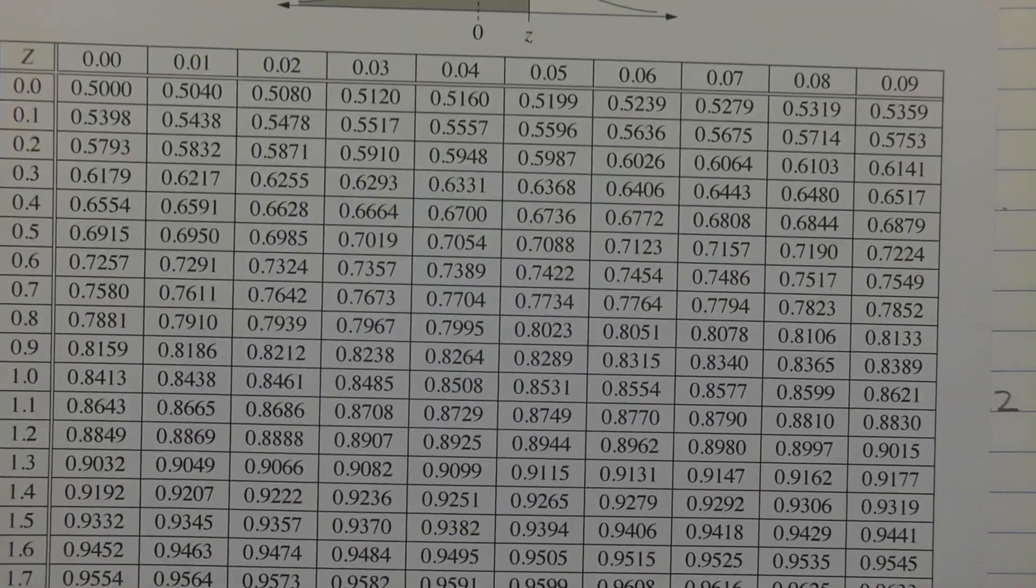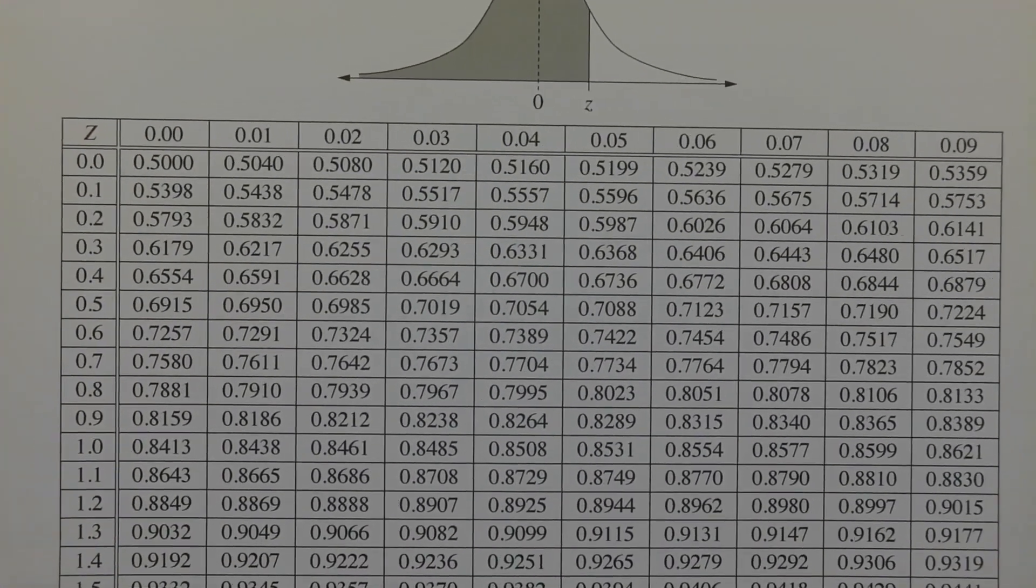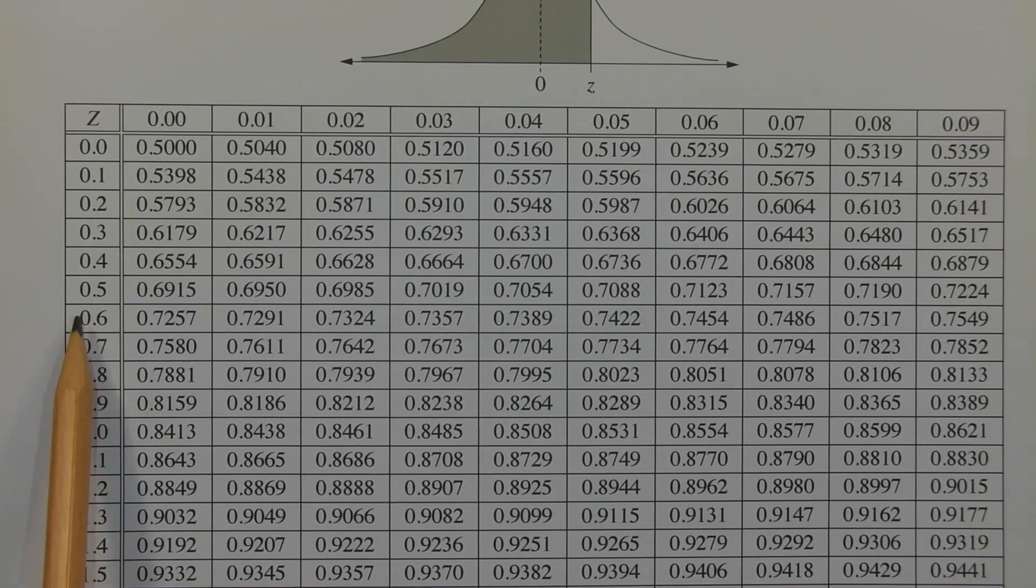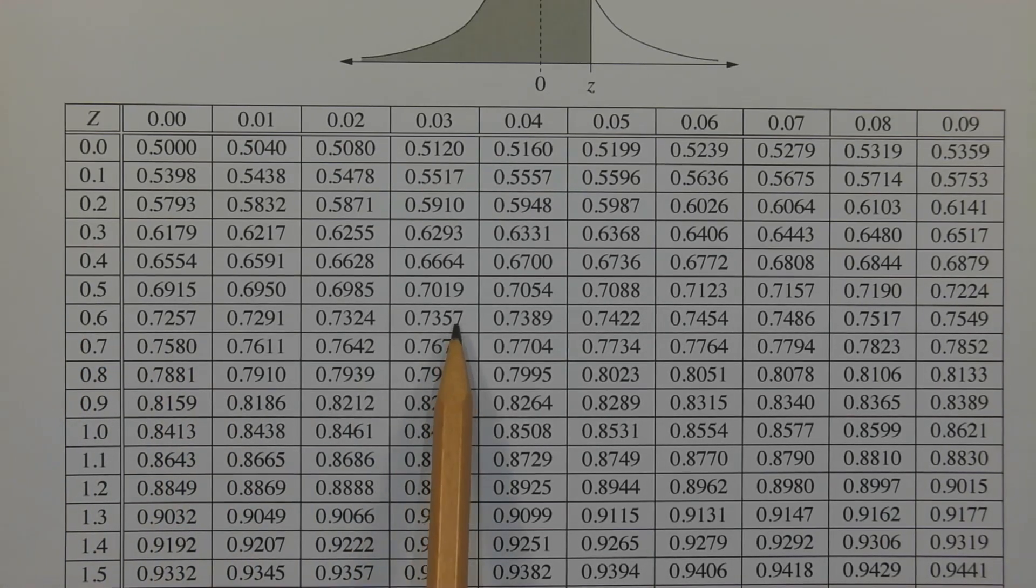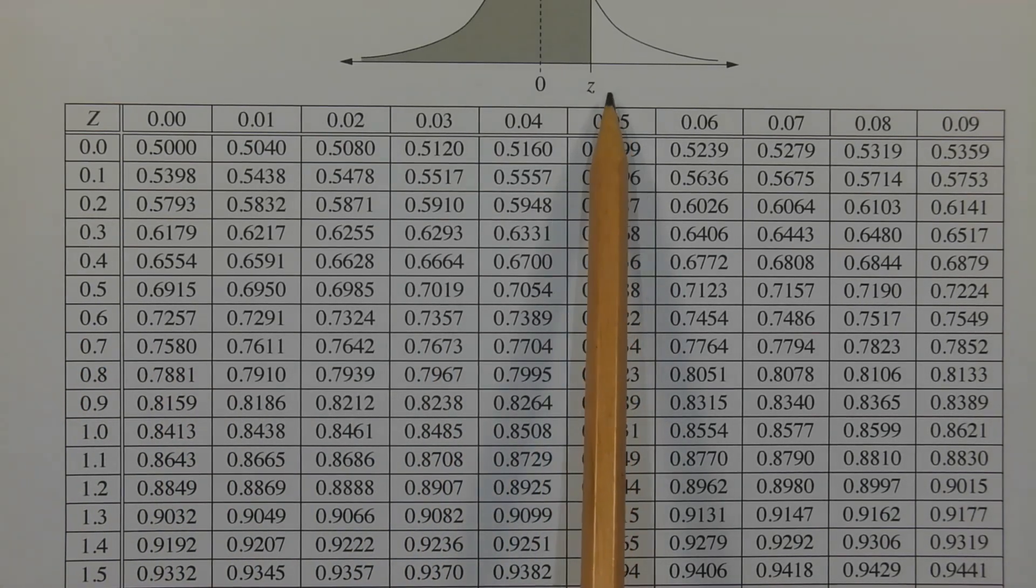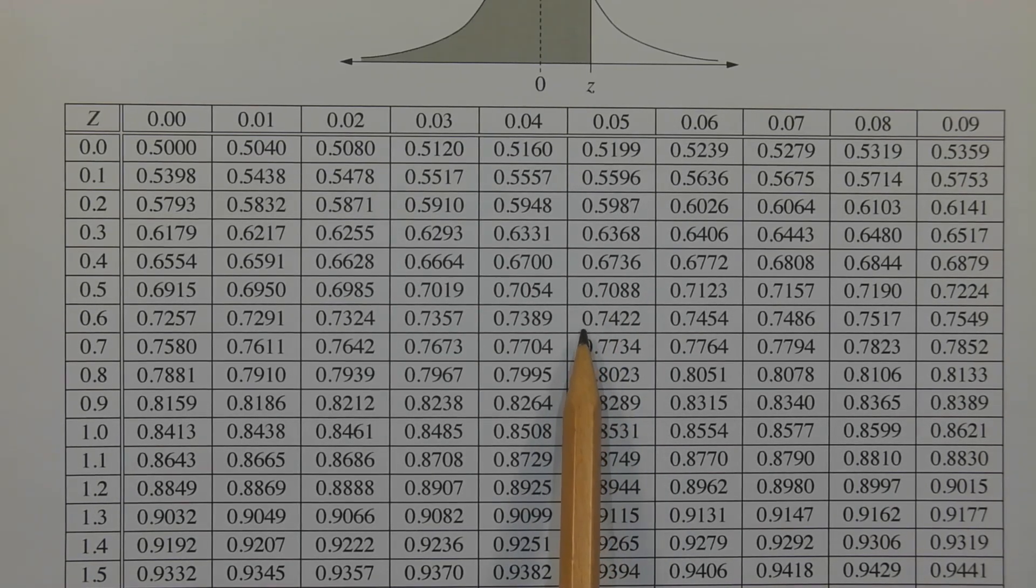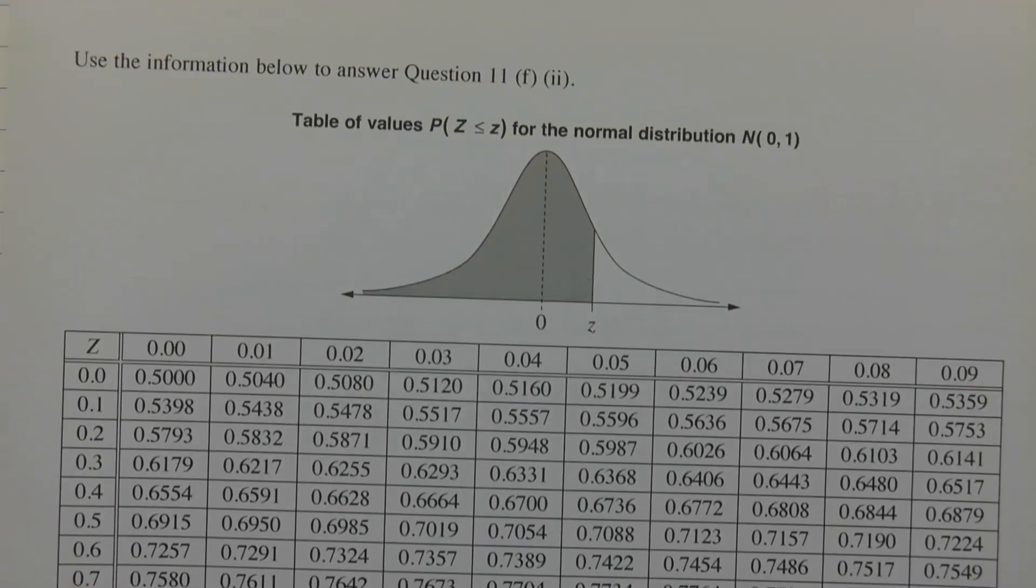So here's the table of Z-scores. And just locating 0.65. So here's 0.6. And if we go across to the column that's 0.05, we get to this value here. And that's how we obtain 0.7422 from the table of Z-scores.